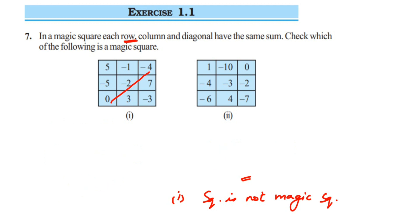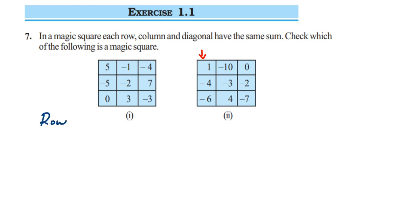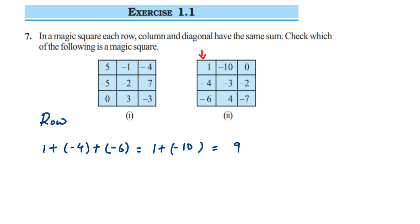Now we do the same for the second square — add the numbers in each row, column, and diagonal and see if the answers are the same. In the first row we have 1 + (−4) + (−6). Adding the same-sign numbers: 4 + 6 = 10, sign is negative, giving −10. Then 1 + (−10): different signs, subtract — 10 − 1 = 9, and the sign of the greater number (−10) is negative, so the answer is −9.